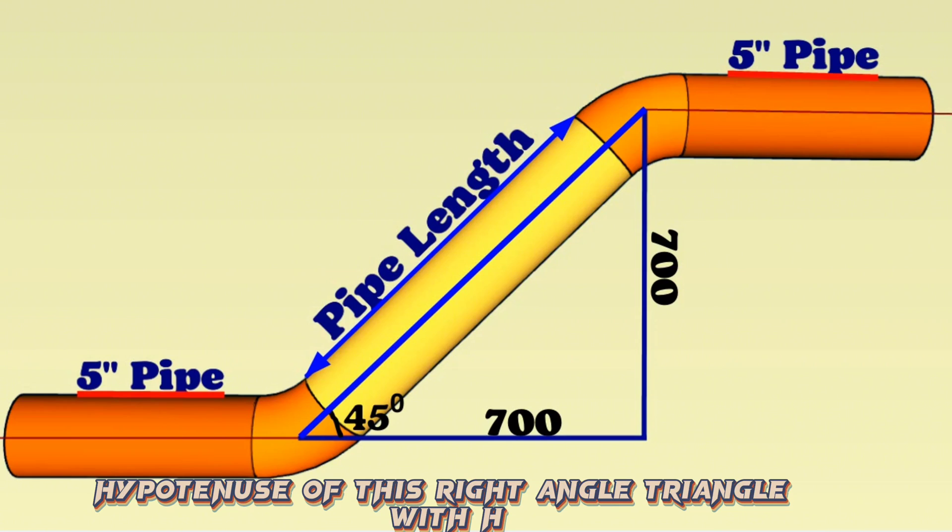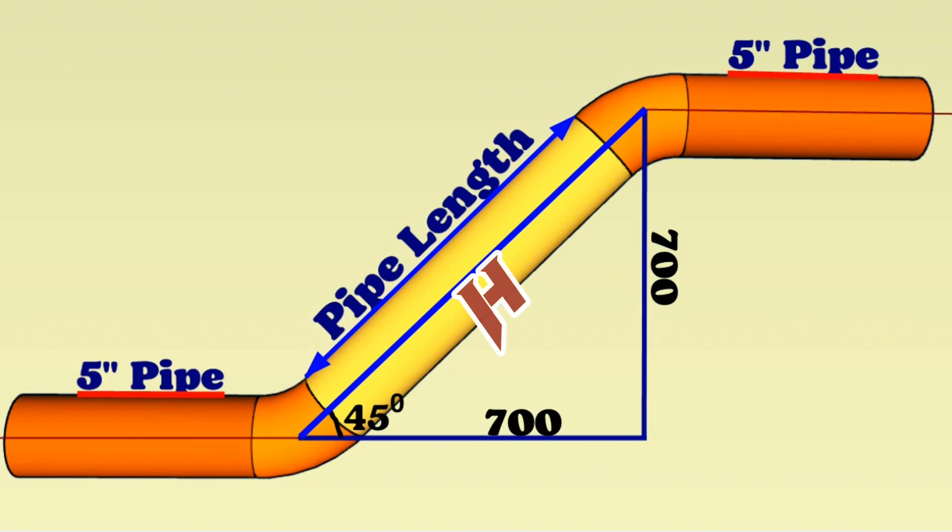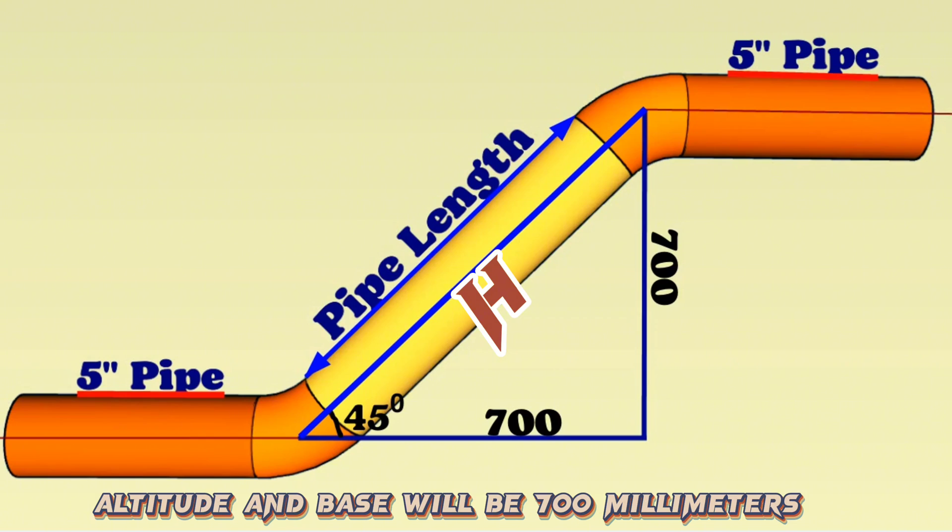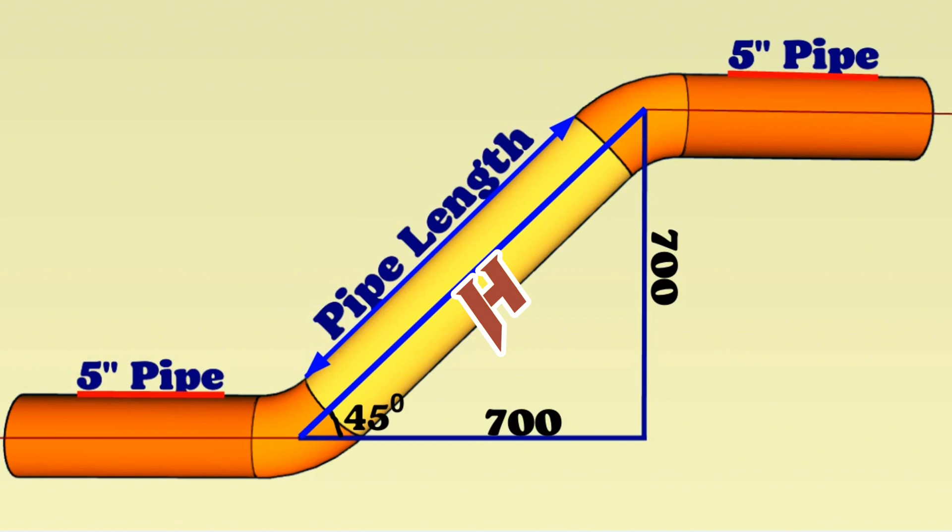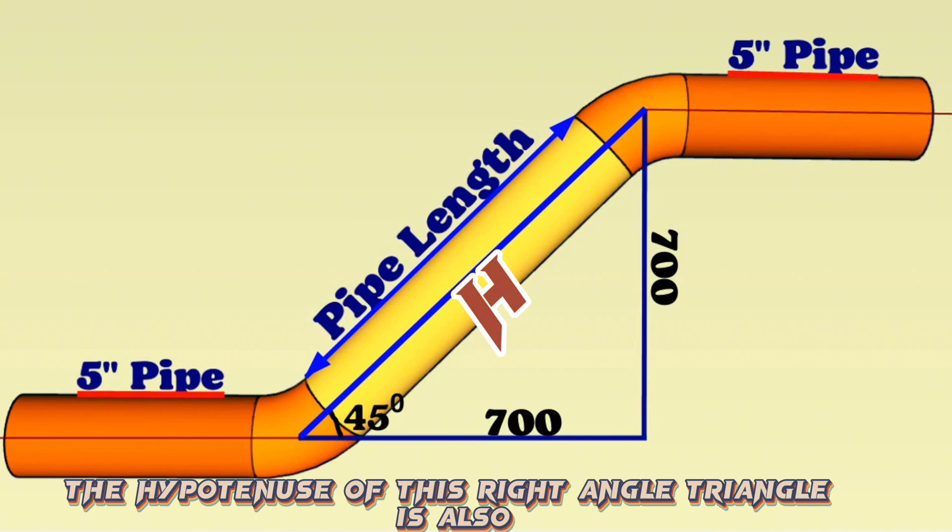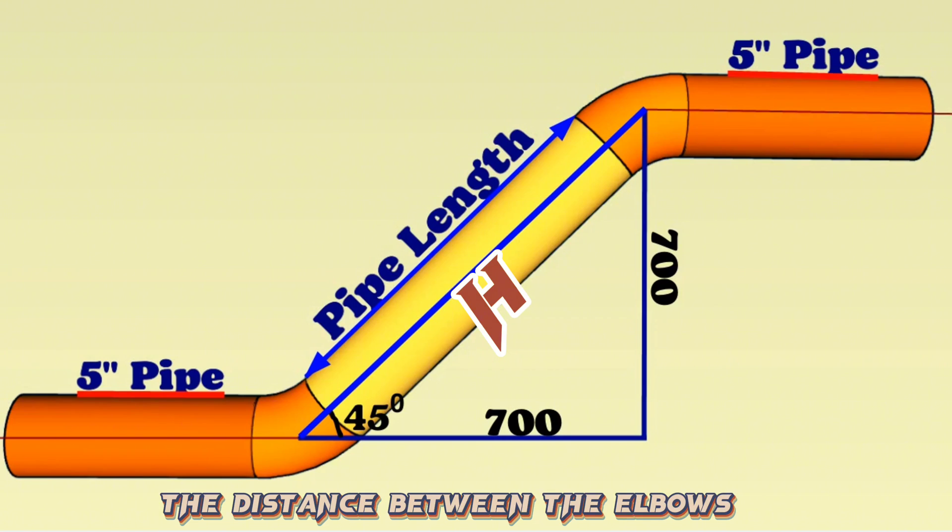Let's mark the hypotenuse of this right-angle triangle with H. Then the hypotenuse of this right-angle triangle will be H millimeter, and the sides, altitude and base, will be 700 millimeters. The hypotenuse of this right-angle triangle is also the distance between the elbows in the pipeline.